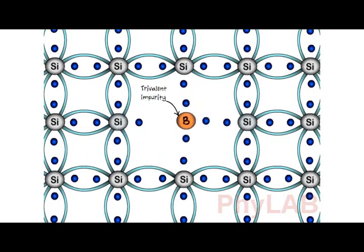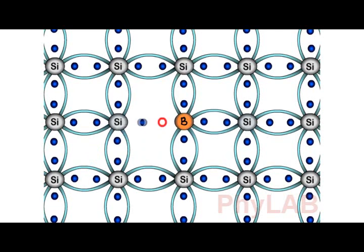In case of trivalent, three electrons of boron will form three bonds with silicon, and in the fourth bond of silicon, there will be one empty space or hole.